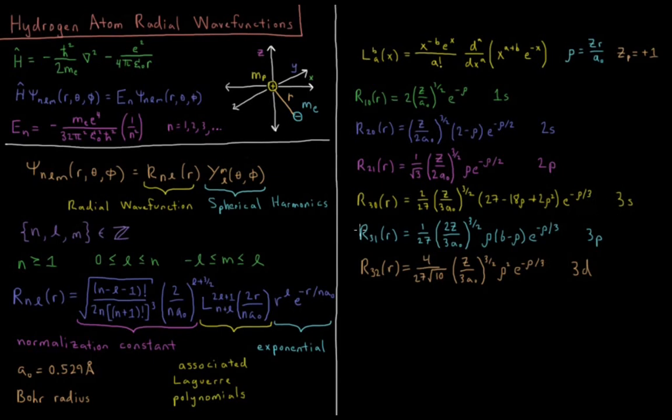We have r31, the 3p function, constant times rho times 6 minus rho, e to the minus rho over 3.